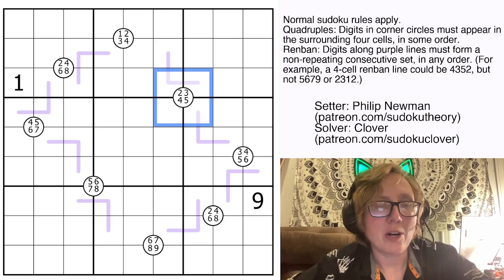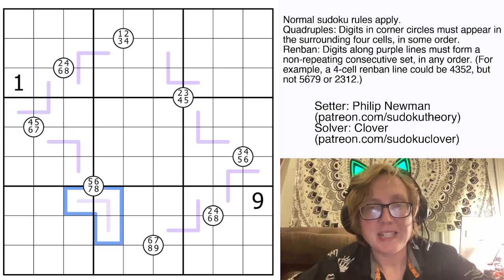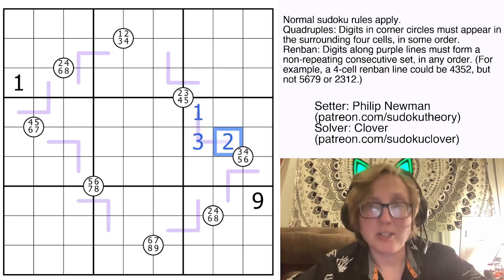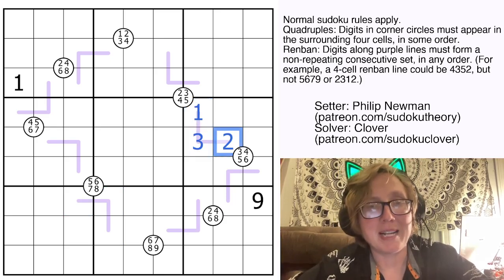Then the other variant we have are Renban lines. Each of these light purple lines represents a set of three consecutive numbers, but those numbers can appear in any order along the line. So in theory, we could have like 1, 3, 2, just because 1, 2, 3 is a set of consecutive numbers, but they don't have to show up actually in order.